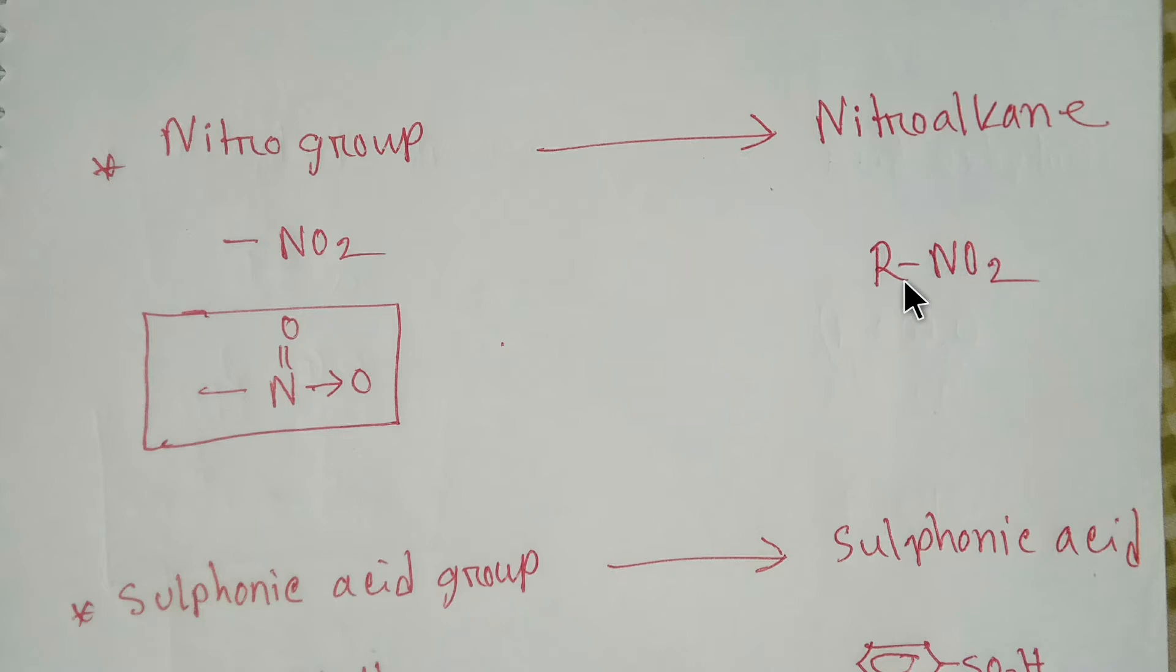The functional group of nitroalkane is nitro group. Here is the formula of nitro group. This is the structural formula. You know that in nitro group there is a coordination bond. Here is the sign of coordination bond.